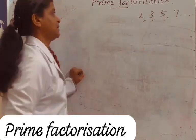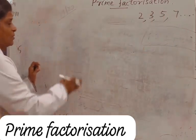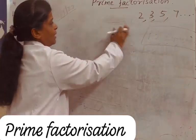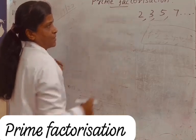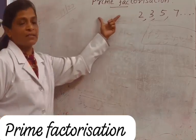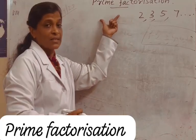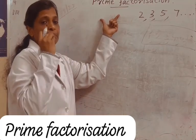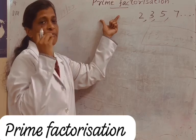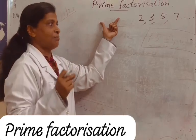Then 11, and it keeps going like that. Now let's do prime factorization. Prime factorization means writing the number as the product of prime numbers.